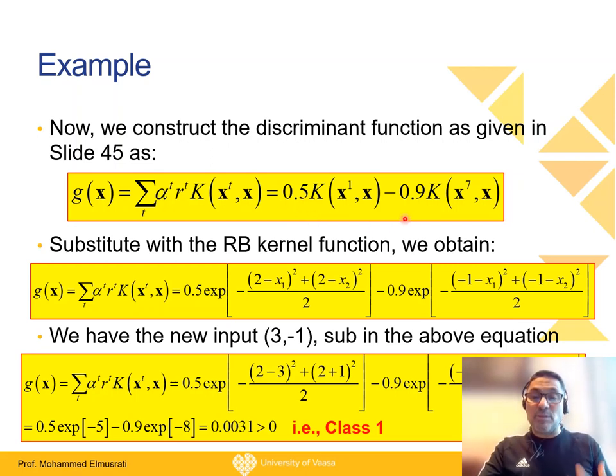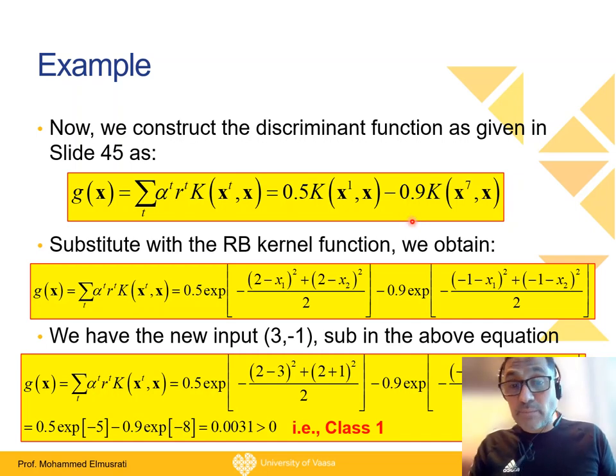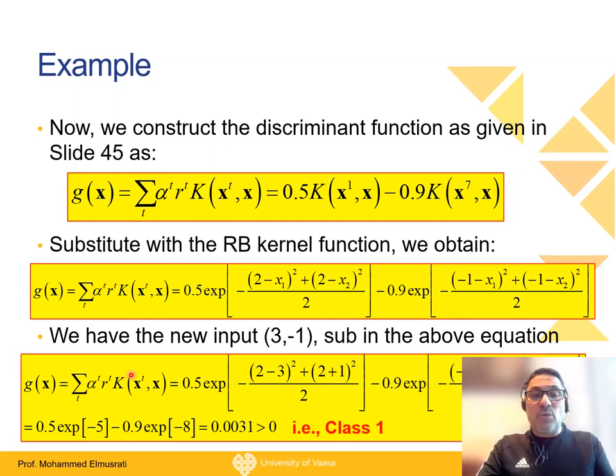Now we substitute. We have x¹ = (2,2) from the table, and we use it with the new entry. We substitute for x⁷ = (-3,1), and we found that the discriminant function was greater than 0 - it is 0.0031 - so we decide that it is in class 1.